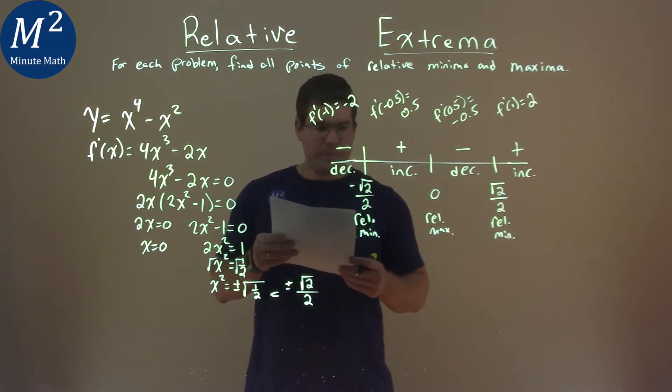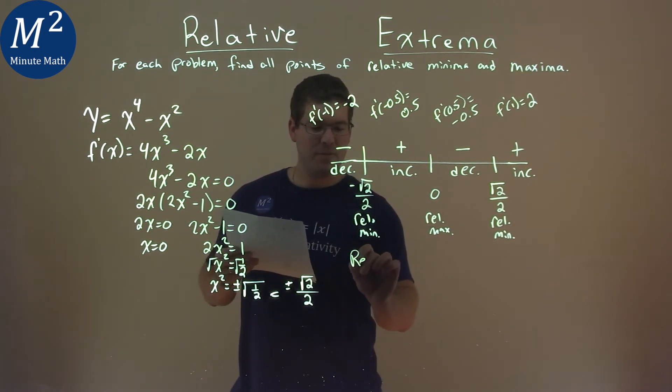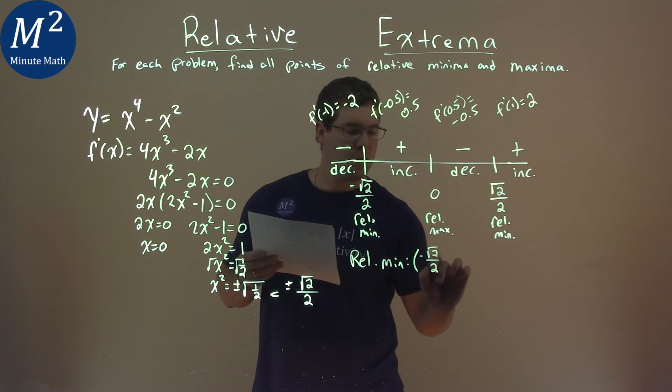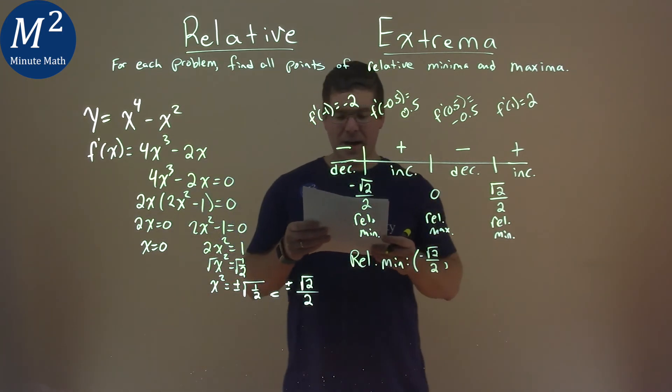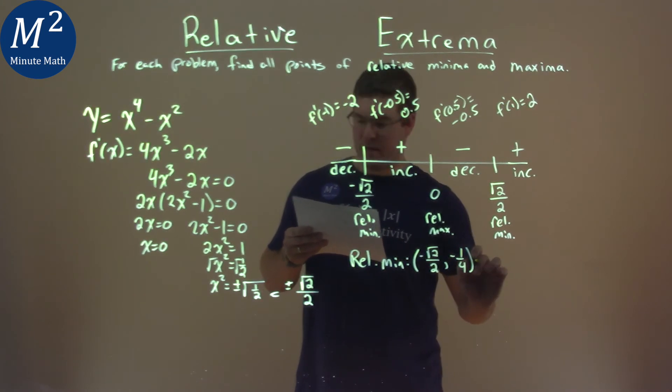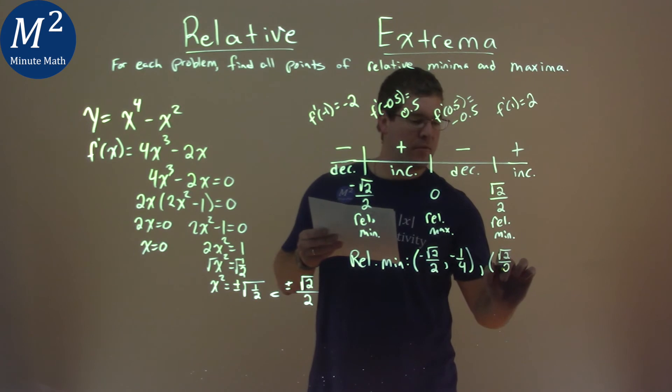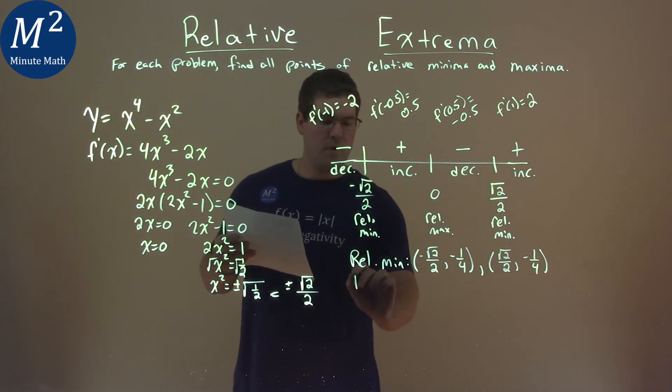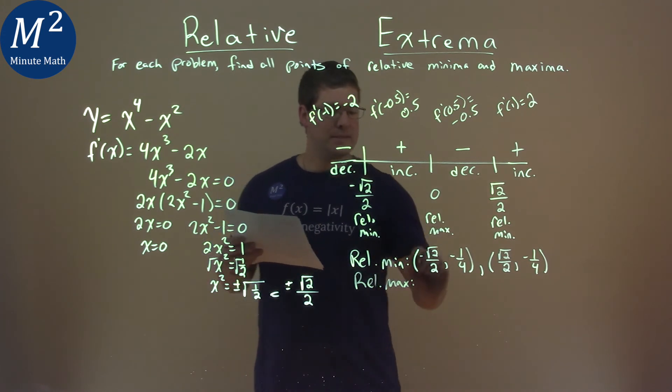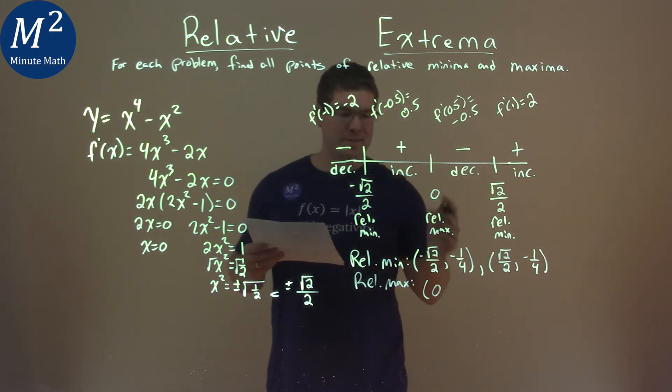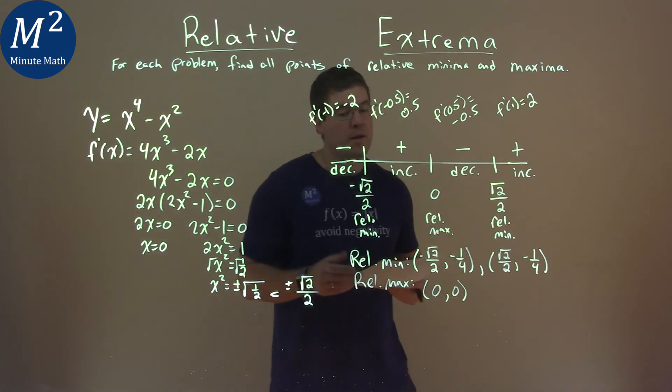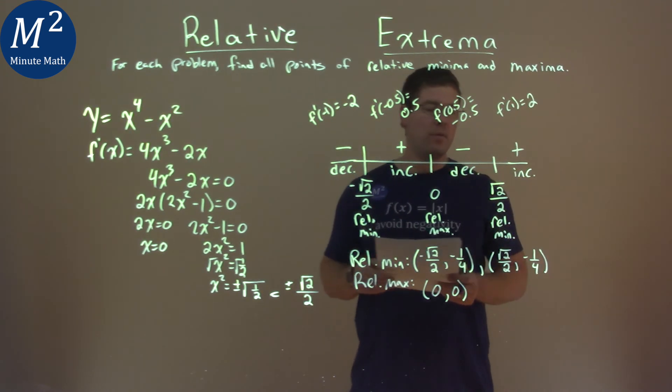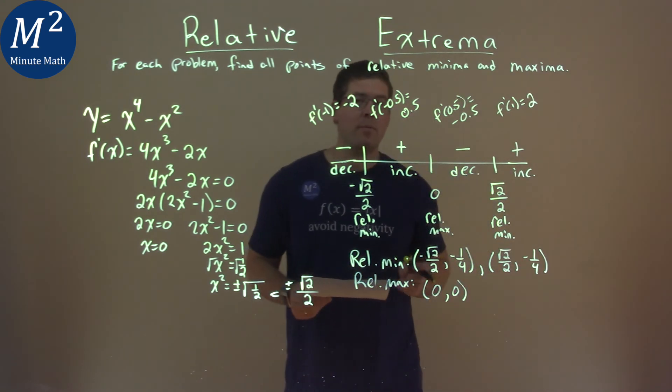Just double check my work. All right, we're good. So we have a relative minimum. Our first x value was negative square root of 2 over 2, and when I plug that into my original function, I got negative 1 fourth. And then for the second value, positive square root of 2 over 2 is the other relative minimum. Plug that into my original function, and I got negative 1 fourth as well. For the relative maximum, I plug 0 into my original function, and that comes out to be 0. And so our final answer here is we have a relative minimum at the coordinate point negative square root of 2 over 2 comma negative 1 fourth, and the other point of square root of 2 over 2 comma negative 1 fourth, and a relative maximum at 0 comma 0.